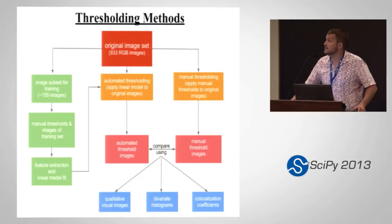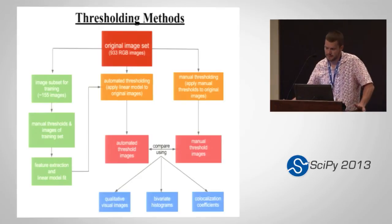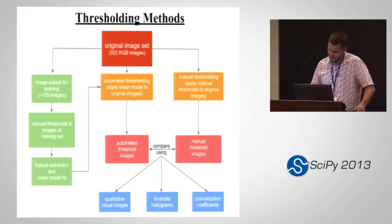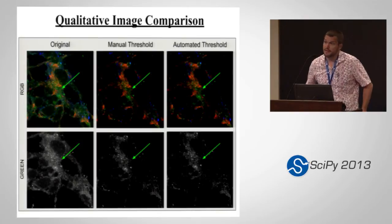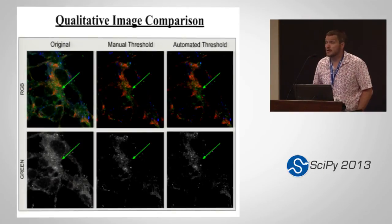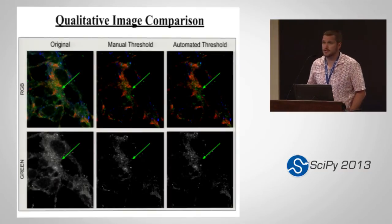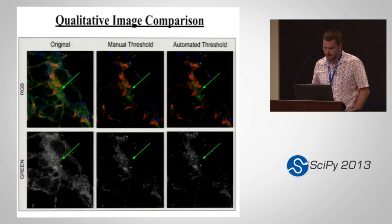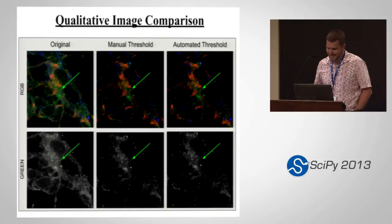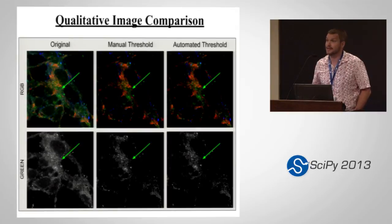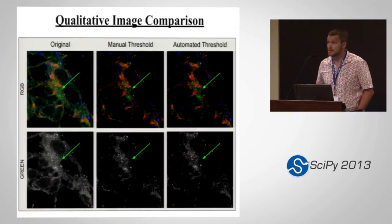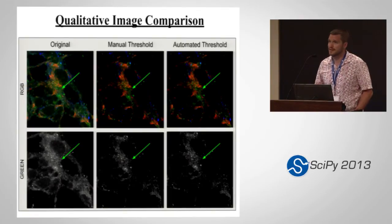We wanted to compare the effectiveness of the manual and automated methods, looking at it three different ways: two qualitatively and one quantitatively. The first, most basic way is whether the automated threshold method makes the expert happy when they see what the thresholds produced — and the short answer is yes. This appears to be the same point in the same images, and the background noise in the green channel is removed in a similar manner by both methods — just a quick qualitative comparison.